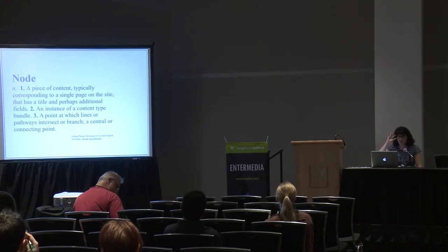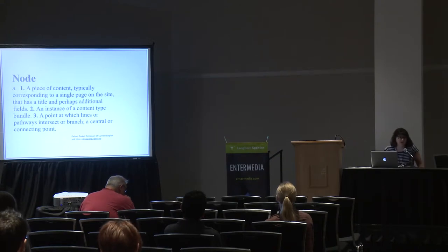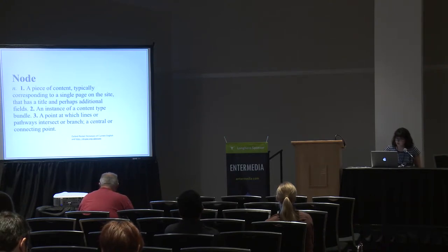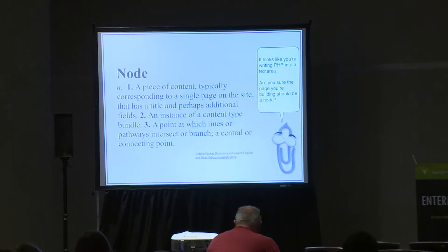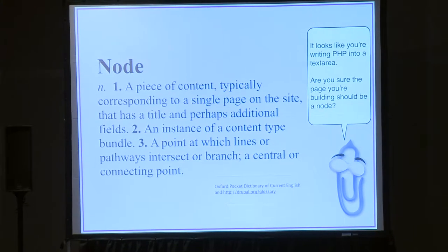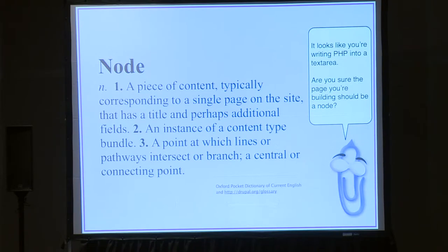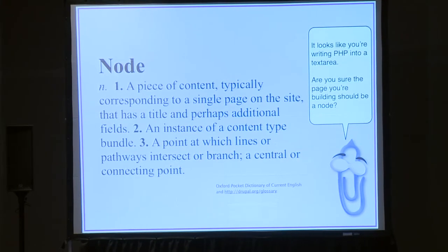It's really important when coming up with your architecture to think about how everything relates to each other. A lot of times you'll get mockups that just say 'related content' — you need to figure out what all those connections actually are. Also: if you're writing PHP in a node, that's not really a piece of content, it's some functionality. Never use the PHP filter — it's the red flag of core. If you need to write custom code, do it in a custom module with your own menu callback. Just because you need a page does not mean you need to create a node.